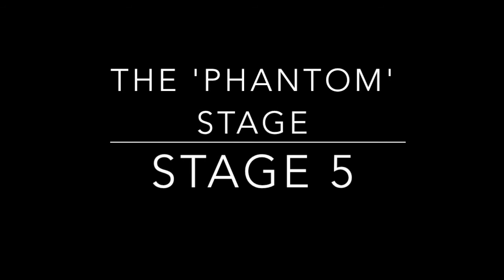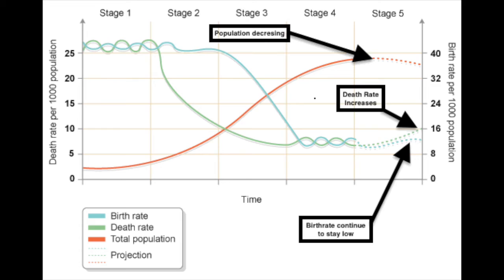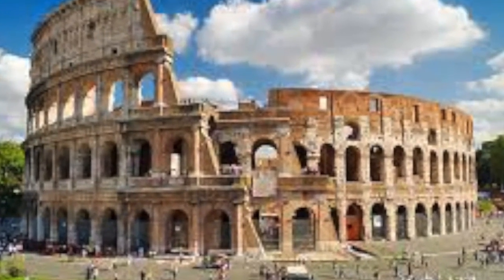That leads into stage five, a phantom stage as it's sometimes called, where we begin to see some more changes. Stage five is where we see death rates exceed birth rates over a long period of time, causing population to decline and even go into negative natural increase rates. Some geographers disagree it exists, arguing it could just be a cycle within stage four. But when we look at countries like Italy and Russia, we typically see they are not moving closer to a reproduction rate of 2.1 — that's why we've created stage five, representing negative growth over a longer period of time.